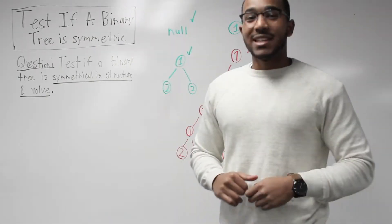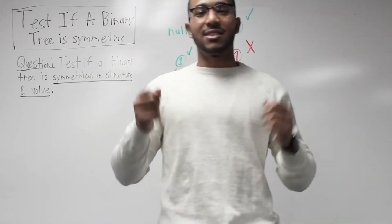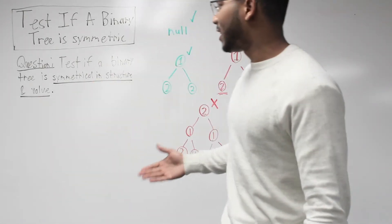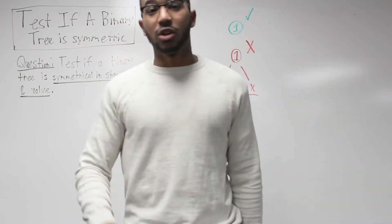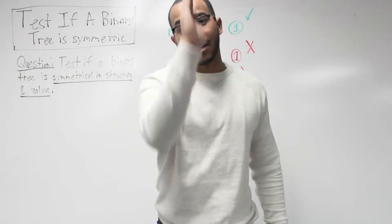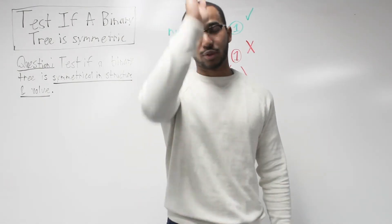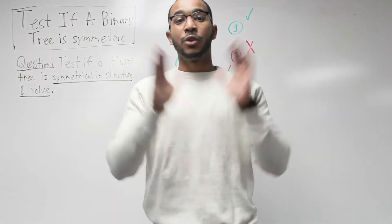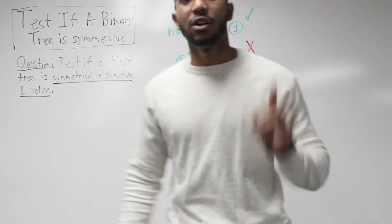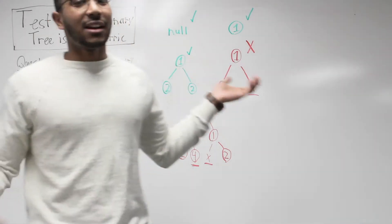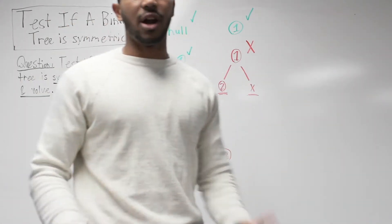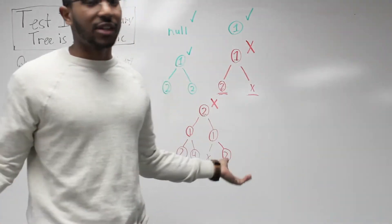Test if a binary tree is symmetric. The question is we need to test if a binary tree is symmetrical in its structure and symmetrical in value. So if we draw a line down the middle of our tree, straight through the root, a vertical line, will the tree fold on itself and will the values be equivalent?